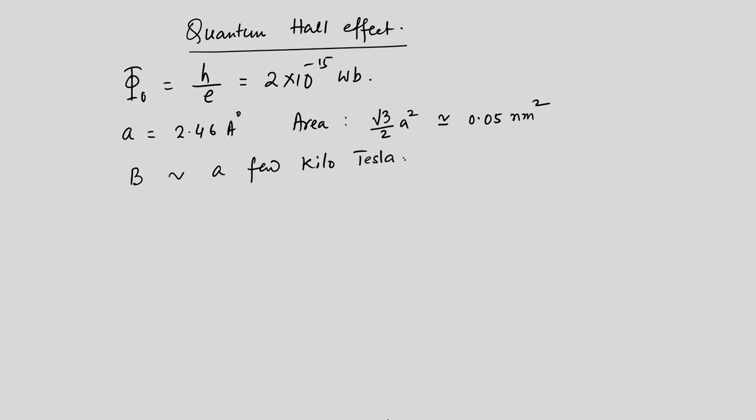That is why, to see the quantum Hall effect in graphene, the magnetic field has to be very large — larger than what we have seen for the 2D electron gas or the gallium arsenide structures discussed earlier.